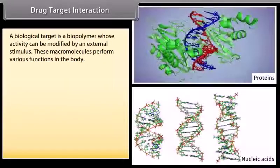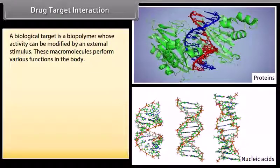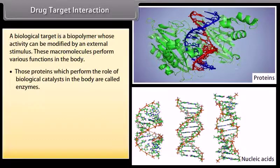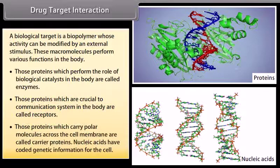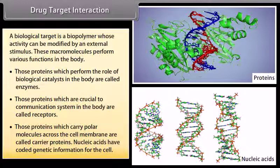Drug-target interaction: a biological target is a biopolymer whose activity can be modified by an external stimulus. These macromolecules perform various functions in the body. Those proteins which perform the role of biological catalysts in the body are called enzymes. Those proteins which are crucial to the communication system in the body are called receptors. Those proteins which carry polar molecules across the cell membrane are called carrier proteins. Nucleic acids have coded genetic information for the cell.